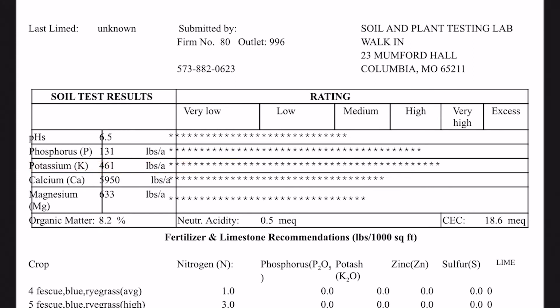Other vital elements to the soil are calcium, designated as CA, and magnesium, designated as MG. These elements help with the plant's development and healthy growth. Again, the soil test report shows good levels, so no amendments needed.